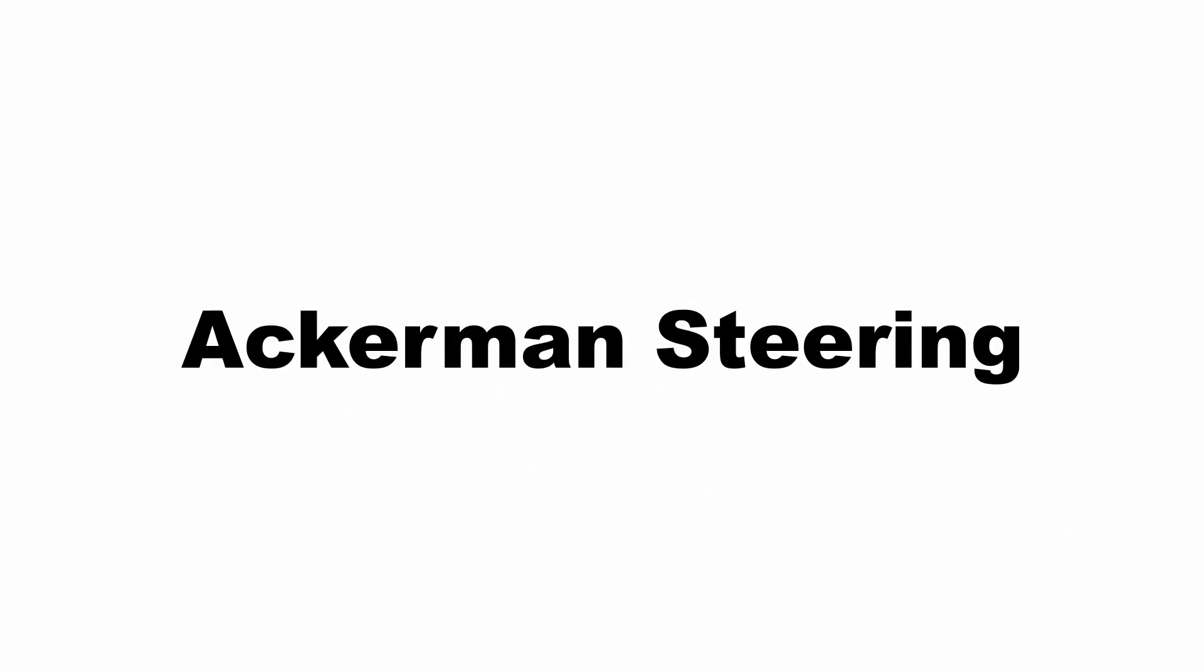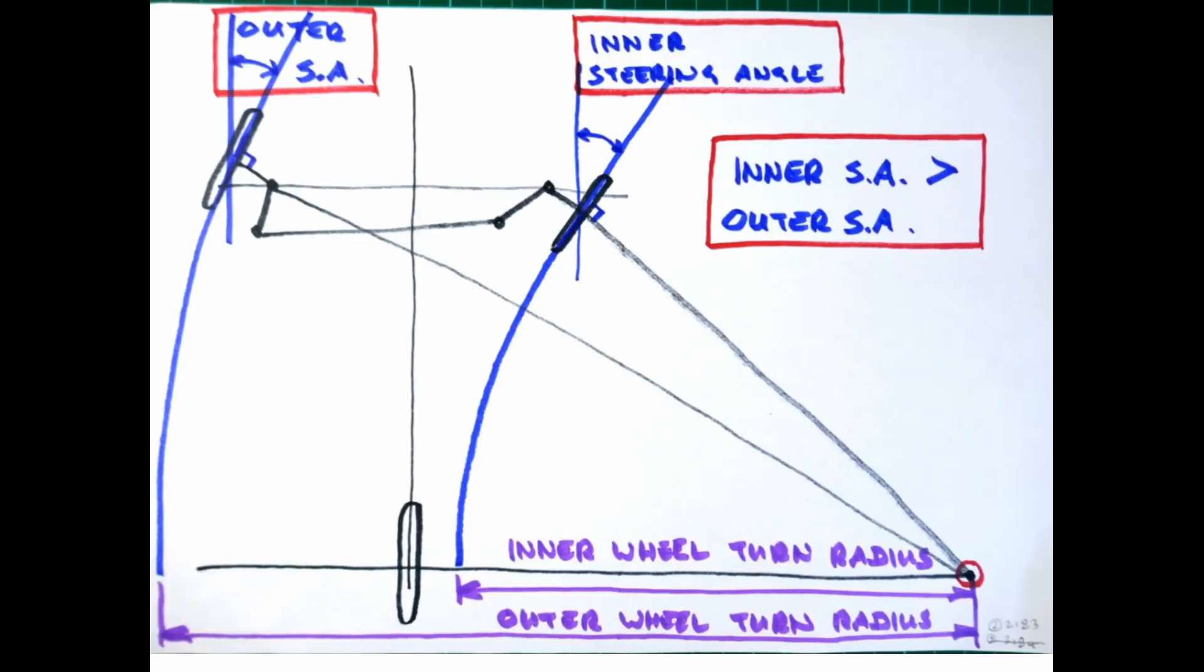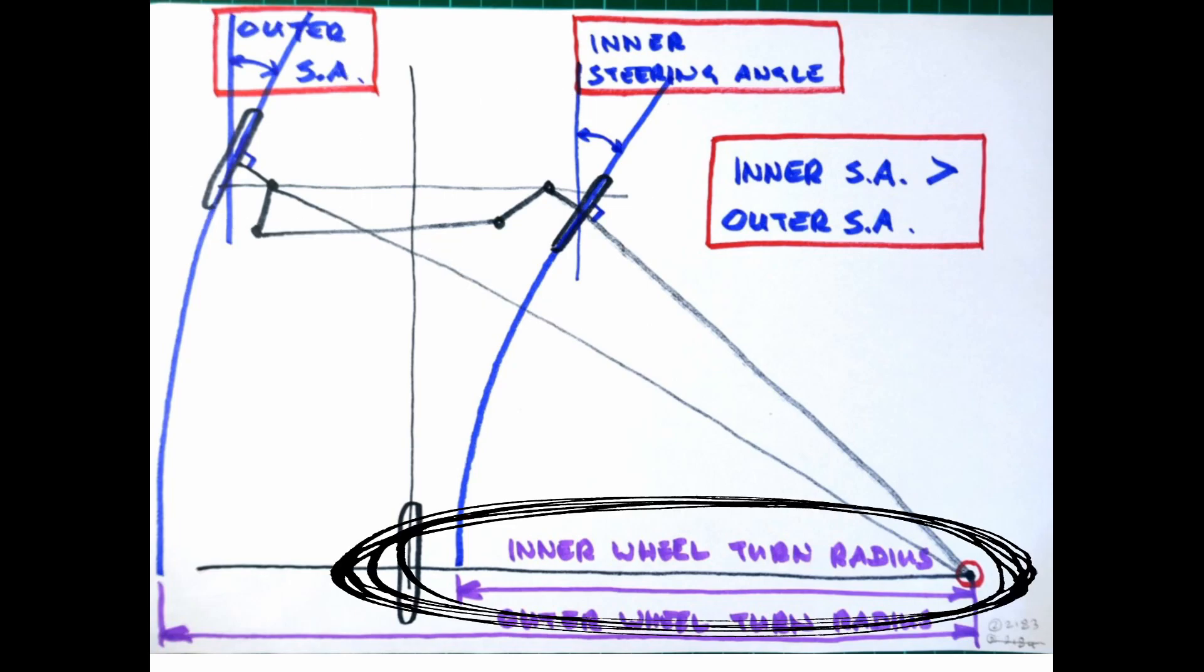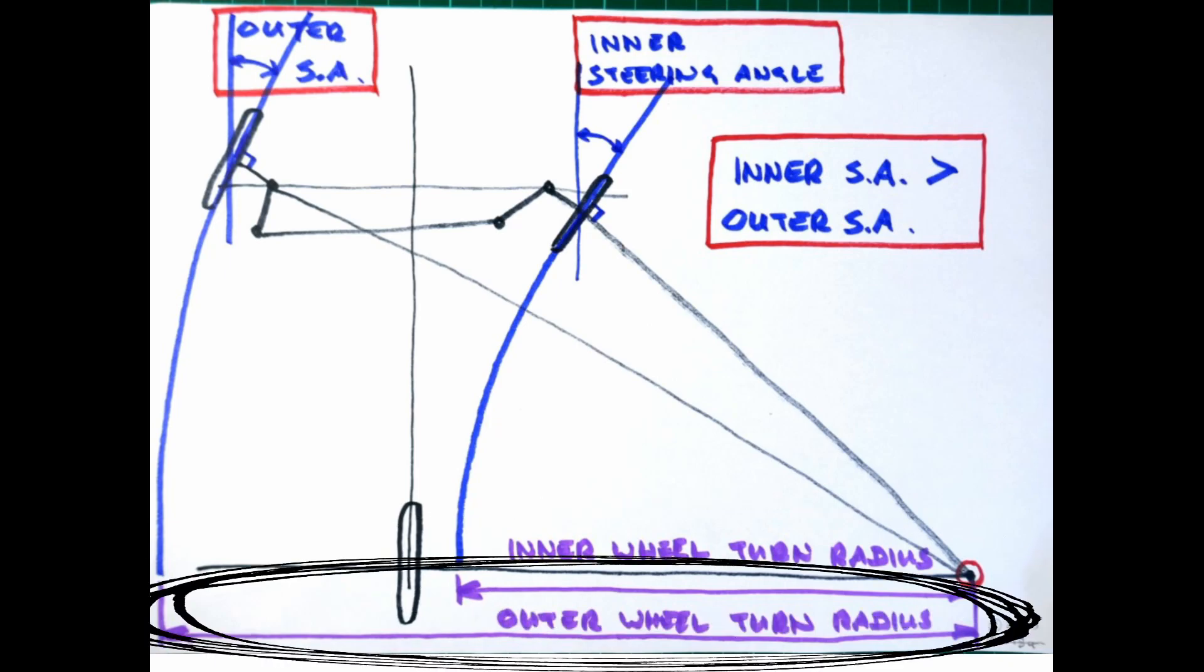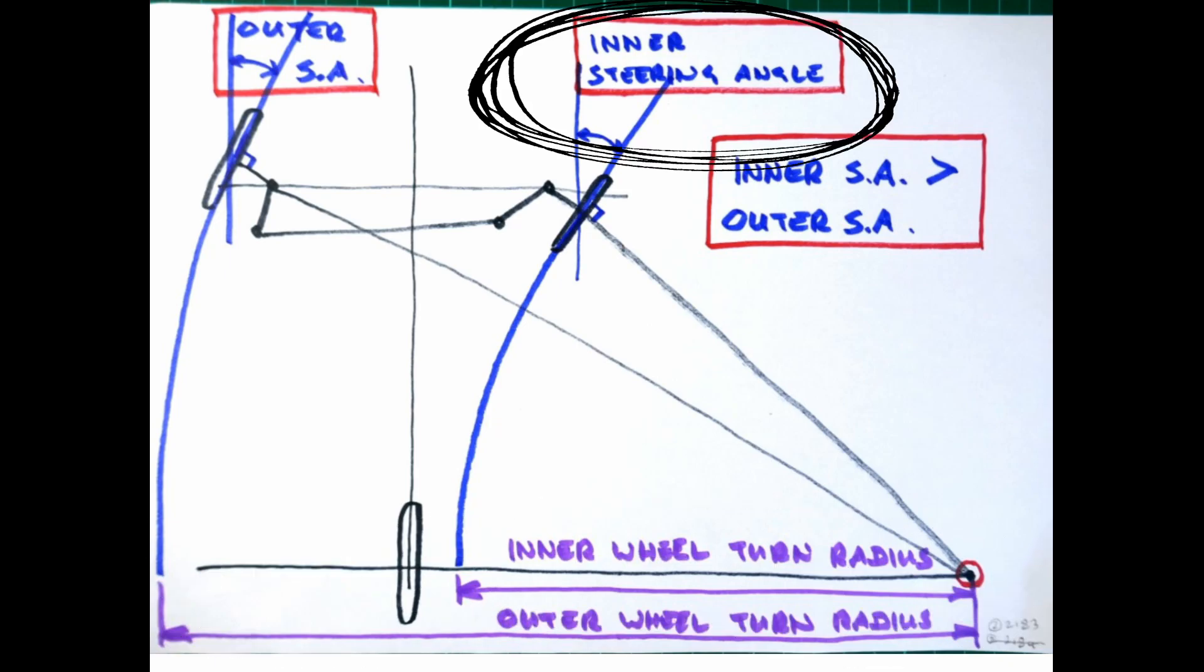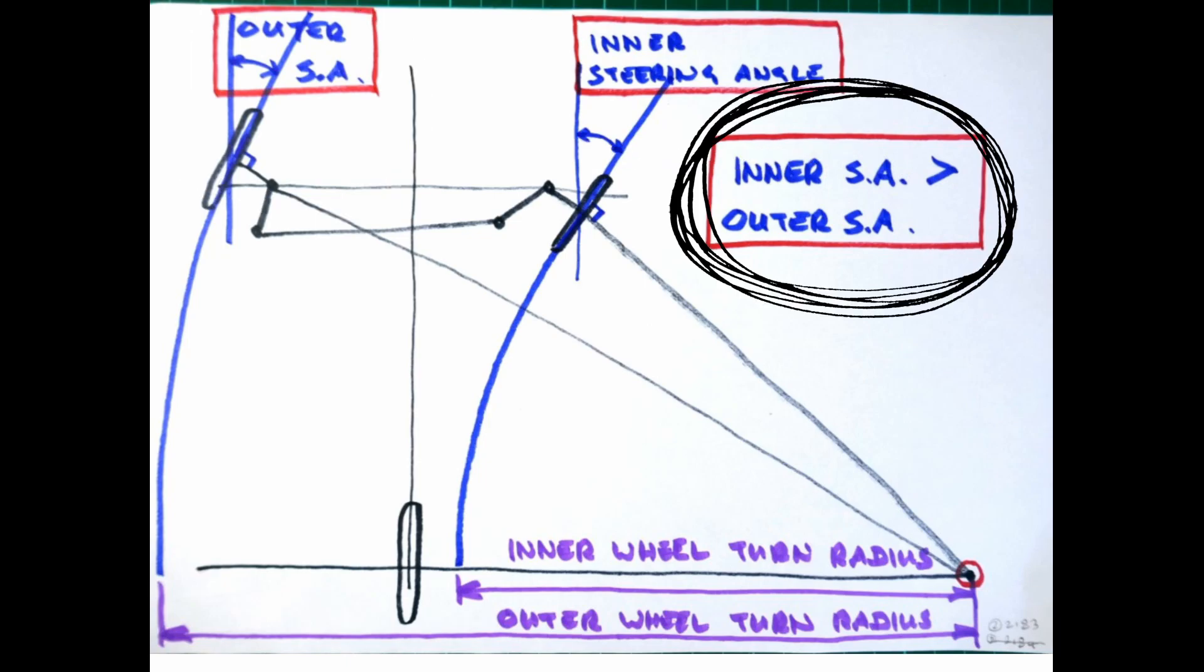Ackermann steering. You've probably heard of Ackermann steering. What Ackermann says is that the inner steered wheel has to pivot through a greater angle than the outer wheel to avoid tire scrub. So the inner wheel has a smaller turn radius relative to the outer wheel and the inner wheel has to steer through a greater angle than the outer wheel has to. So the inner steering angle is greater than the outer steering angle.